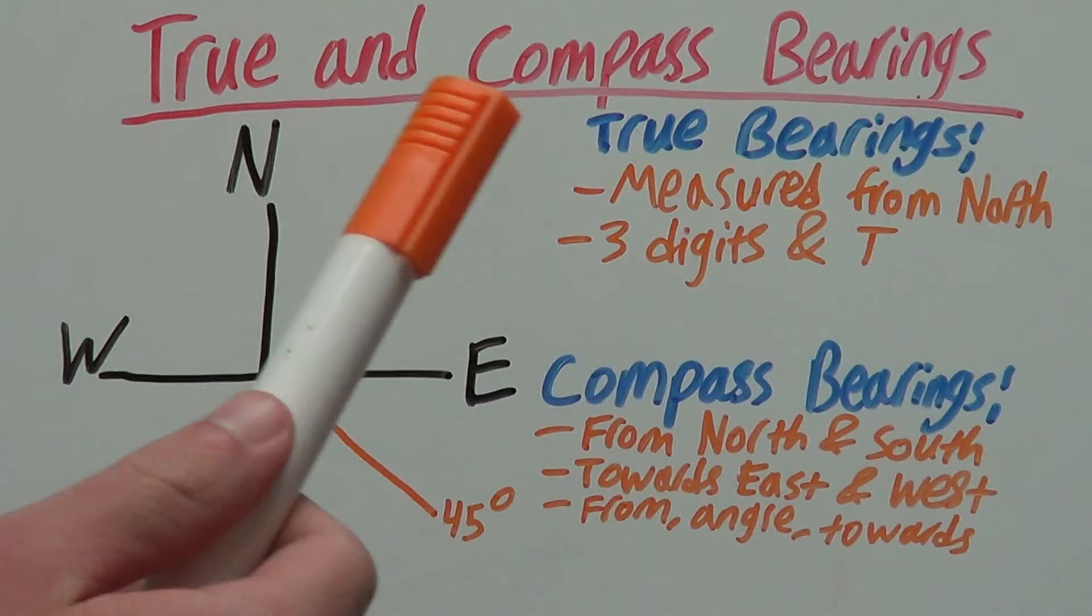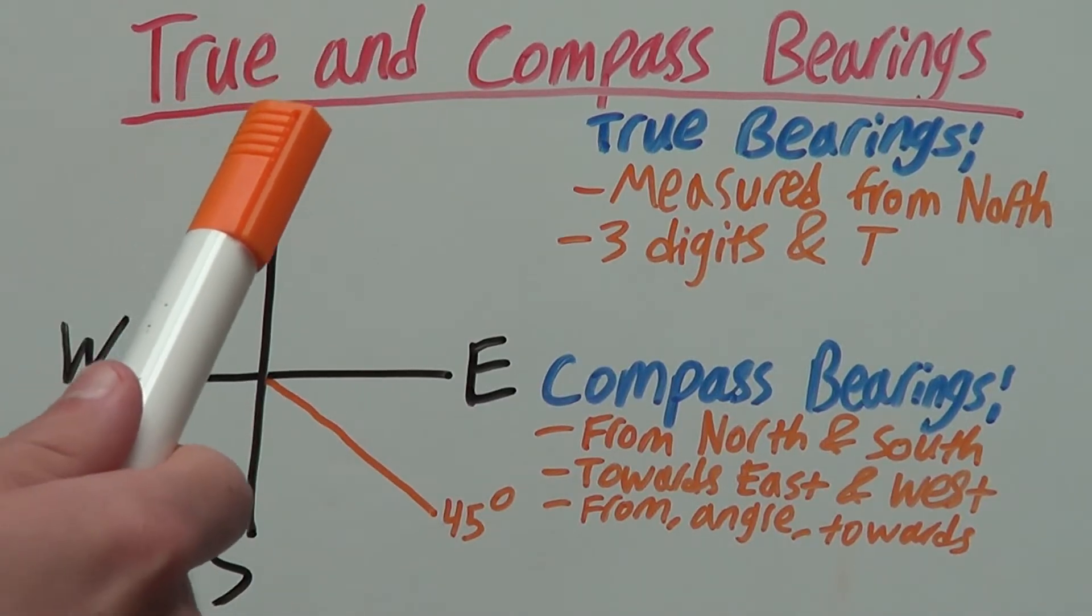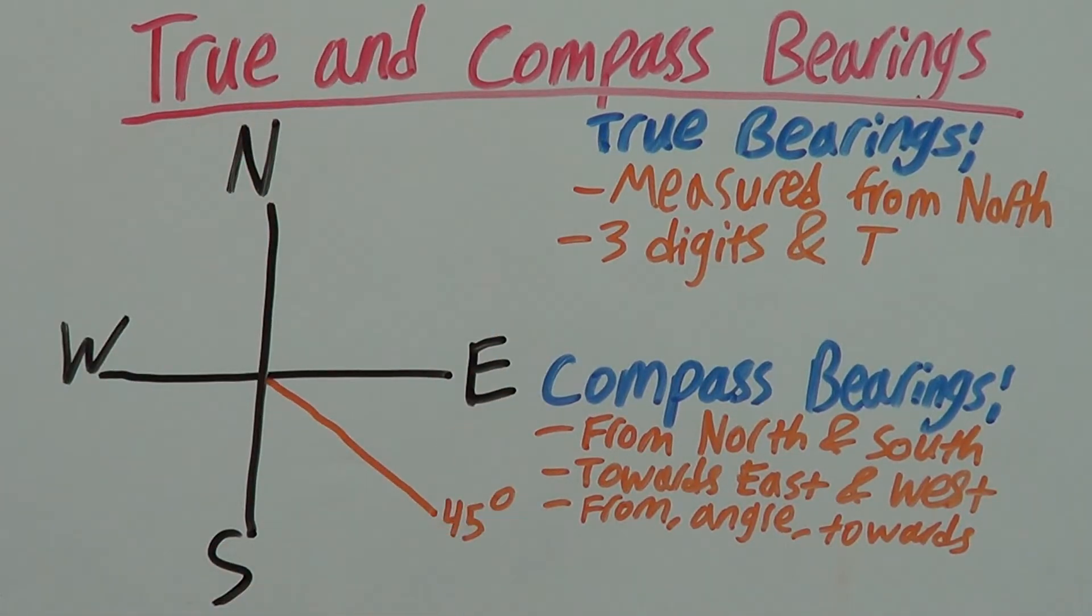Firstly, true bearings are measured clockwise from north and are written with three digits followed by a capital T.